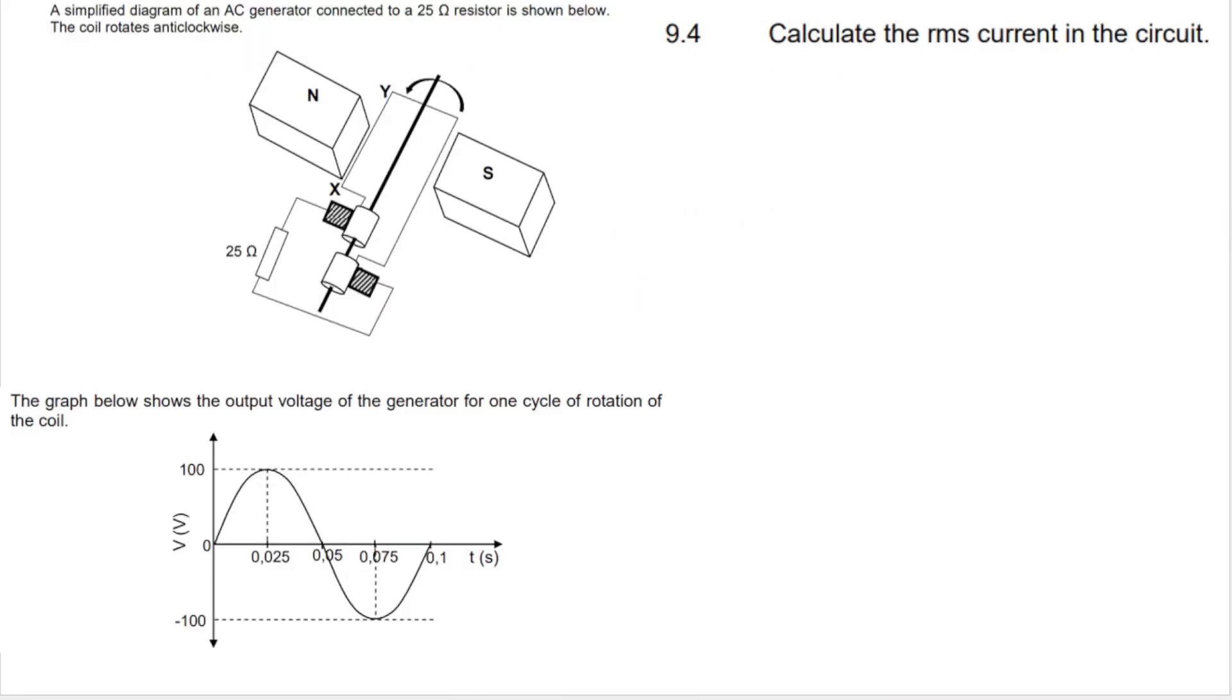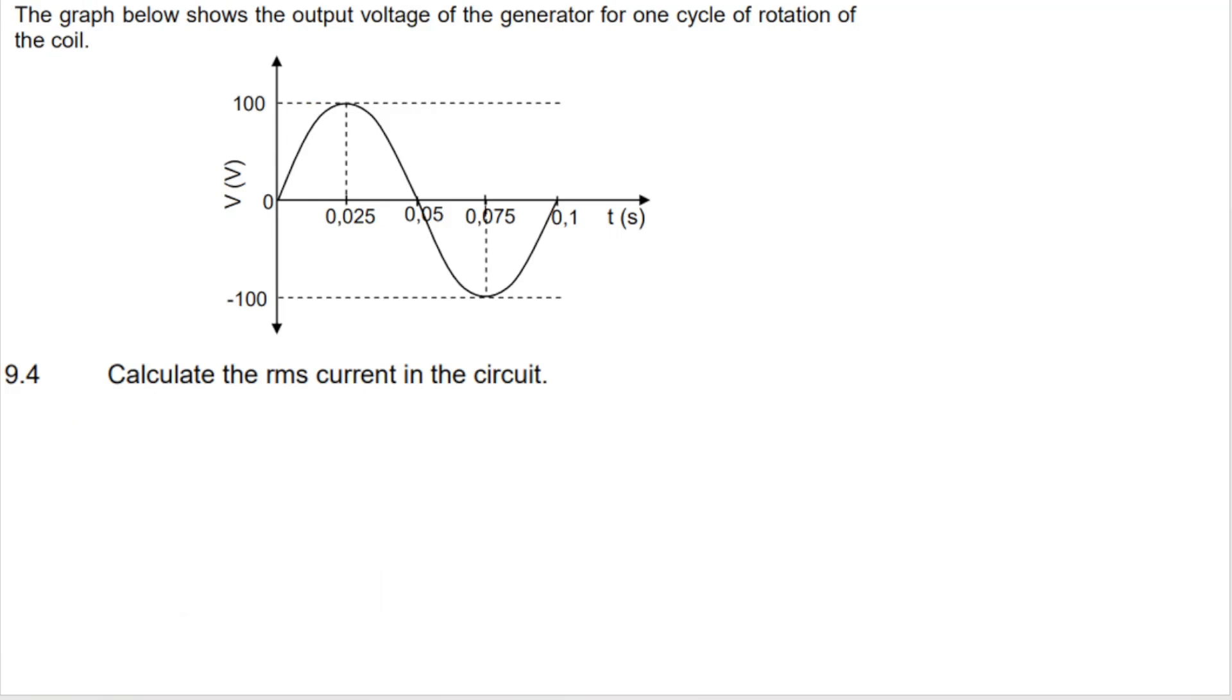My next question is asking me to calculate the RMS current in the circuit. Now just to read over here, it says a simplified diagram of an AC generator is connected to a 25 ohm resistor and the coil rotates anti-clockwise. The rotation of the coil was important for question 9.1 and 9.2. So the only important information from this is the 25 ohm resistor. Then the other bits of information that I have, so far I have a 25 ohm resistor. The other bits and pieces of information will have to come from the graph.